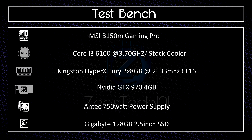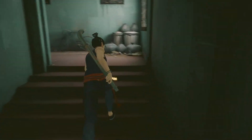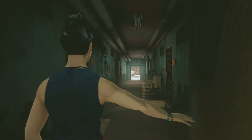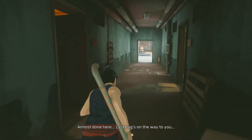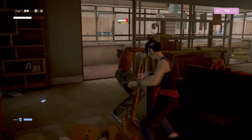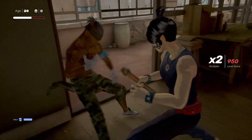The test bench setup is: Core i3-6100 CPU on an MSI B150M Gaming Pro motherboard, 16GB of DDR4 3000MHz RAM running at a locked 2133MHz, a 750-watt power supply, a 128GB SSD that I ran the games from, and an MSI 4GB GTX 970. I chose the GTX 970 specifically because going any higher starts causing bottlenecks.